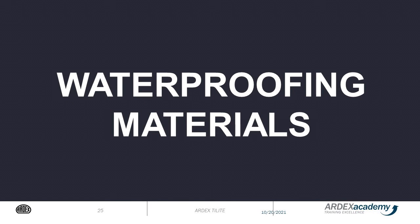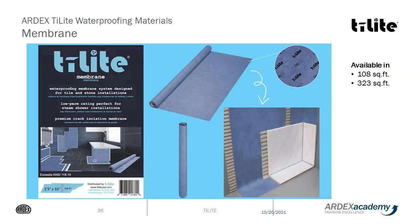Now let's take a look at the waterproofing materials and accessories. A full line of waterproofing membranes and accessories are available. The sheet membrane has a very low perm rating, making it ideal for steam showers and steam rooms. The sheet membrane comes in two convenient roll sizes: 108 square feet and 323 square feet.